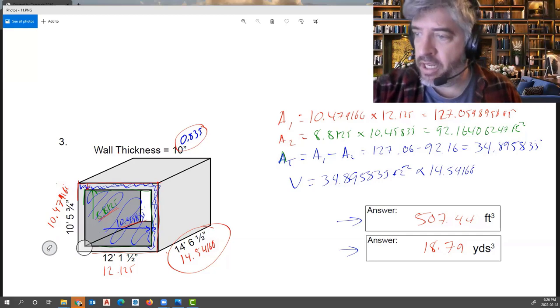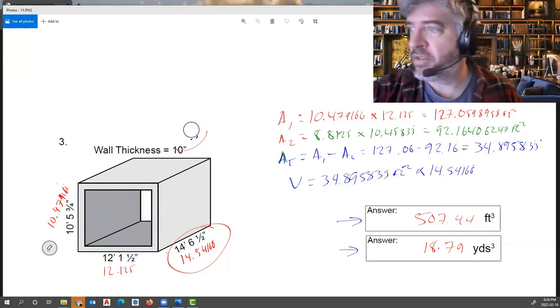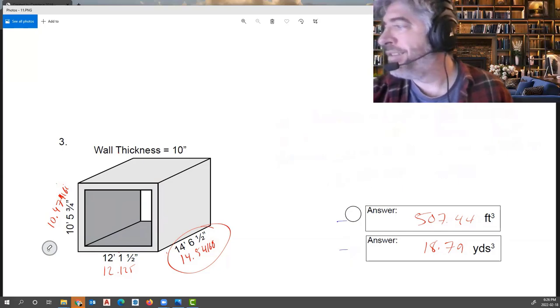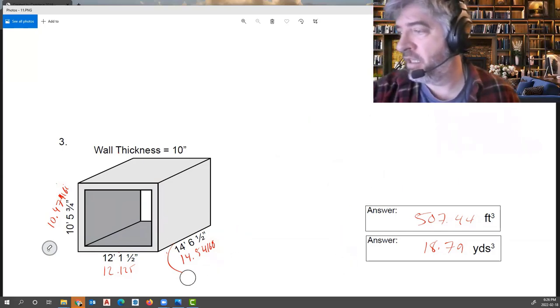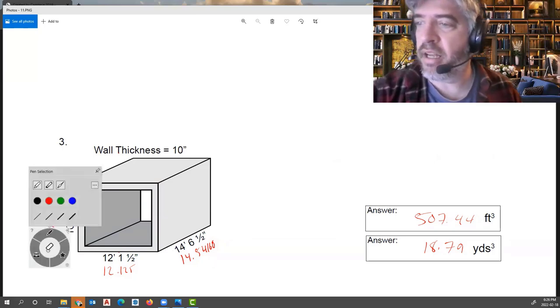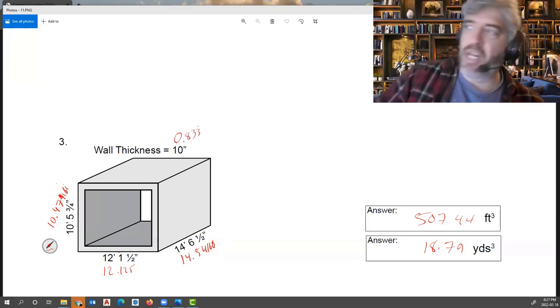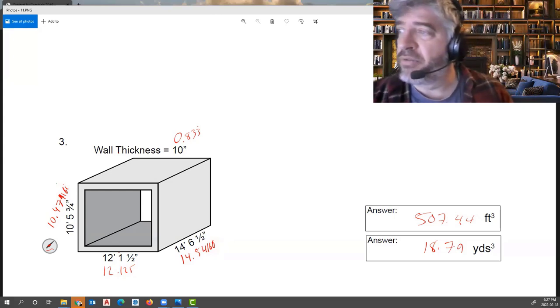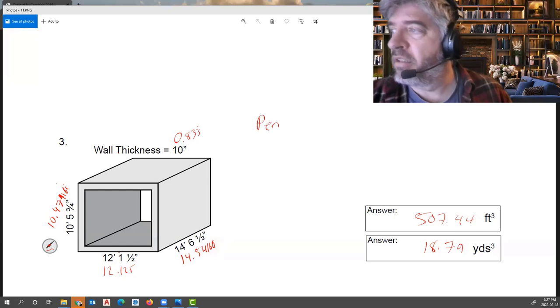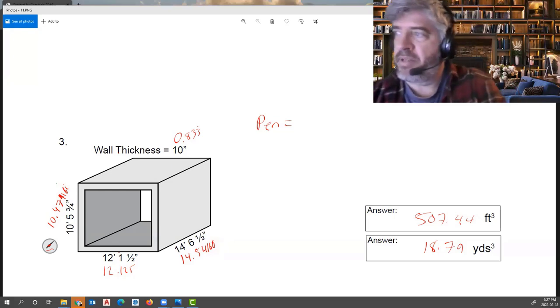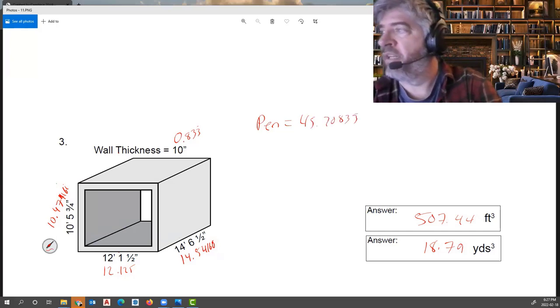Now I'm going to give you one more third option as well, which is the quickest. So what we're going to use this time is we're actually going to use center line perimeter. So first up, I'm going to solve for the perimeter. So I have 10.479166 times 2 plus 12.125 times 2. So I have a perimeter here of 45.20833 repeating.